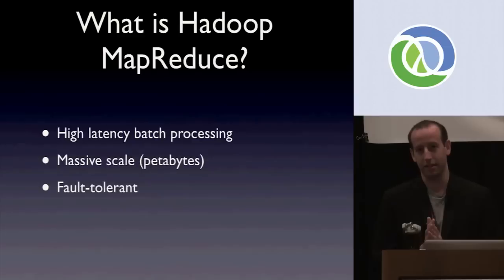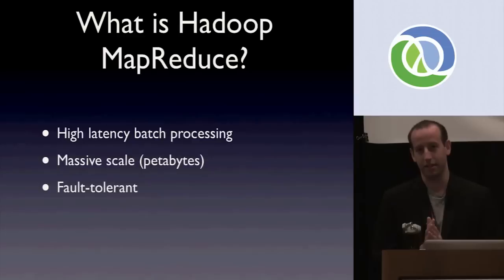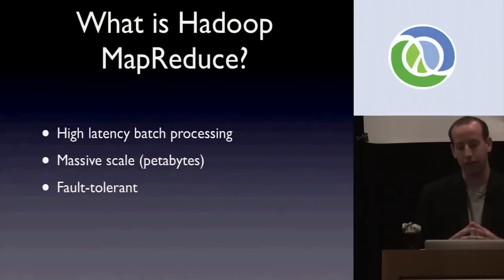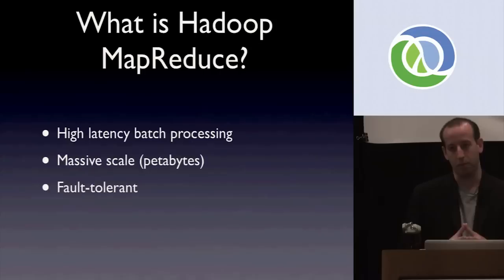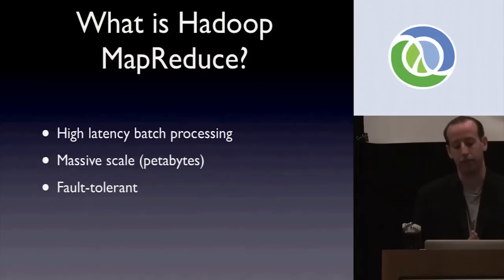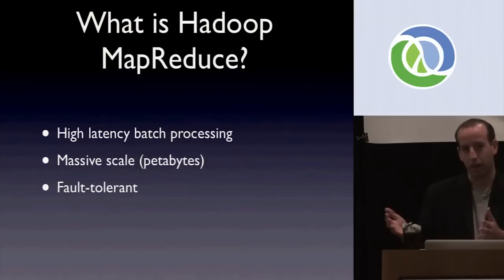Hadoop is a system for doing very large-scale batch processing — I mean really massive scale. You can process petabytes of data with Hadoop. The way it works is you write your jobs in terms of the MapReduce paradigm, and Hadoop can automatically scale your computation across however many nodes you have in your cluster. The same program can run on three nodes, 100 nodes, or 1,000 nodes. Hadoop is also fault tolerant, so if something goes wrong — like a machine goes down — the computation will self-heal and just keep going.